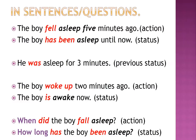In sentences and questions: 'The boy fell asleep five minutes ago' — that's the action. 'The boy has been asleep until now' — that's his present status. We can use 'when' or 'how long' to ask for this type of information. For example, 'When did the boy fall asleep?' — we're asking for the action. 'How long has the boy been asleep?' — we're asking for the status.